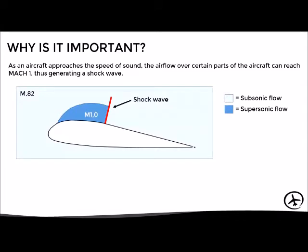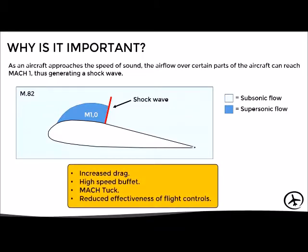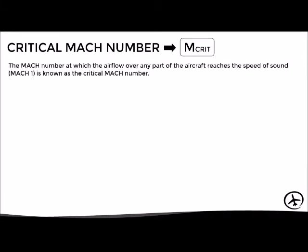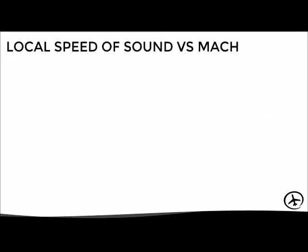For example, an aircraft flying at Mach 0.82 has not yet reached the speed of sound, but the airflow over certain parts — such as the wing — can accelerate and reach Mach 1. Aircraft not designed for supersonic flight will then experience negative effects such as an increase in drag, high-speed buffet, Mach tuck, and reduced effectiveness of flight controls. To avoid these adverse effects, it is important to know the exact speed at which shockwaves start to appear, known as the critical Mach number. This is defined as the Mach number at which the airflow over any part of the aircraft first reaches Mach 1.